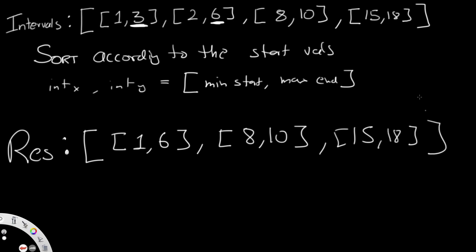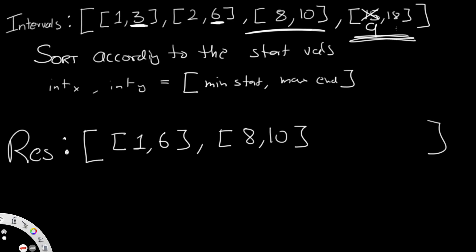Just for the sake of understanding, let's say instead of fifteen we had nine. If that were nine comma eighteen, then nine is less than ten — so there would be overlapping between eight comma ten and nine comma eighteen. The ending value would be the maximum of ten and eighteen, which is eighteen. Also worth noting: the later interval doesn't always have the larger ending value. For example, if we had nine comma ten, we'd choose the maximum between ten and ten — which is just ten — so it stays as eight comma ten.